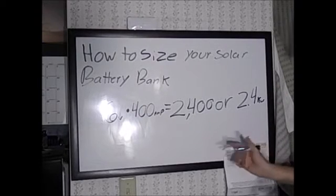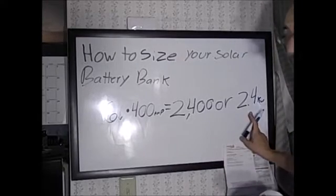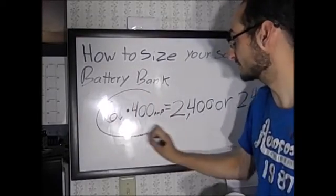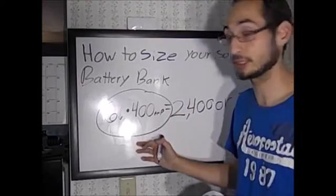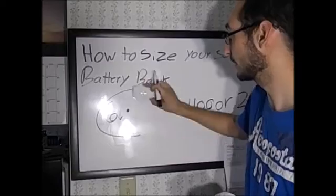So basically there's 2.4 kilowatts of power stored in a 6 volt, 400 amp battery. With that part of the equation out of the way, we know how many kilowatts per battery.